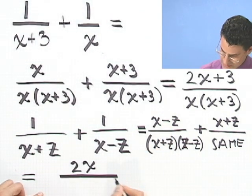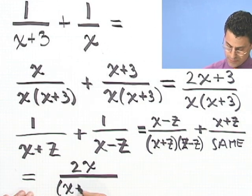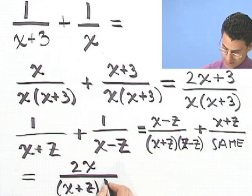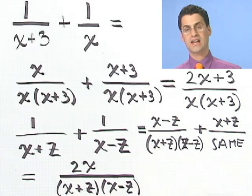And on the bottom, I just have all that good stuff there. And let's make sure we record it correctly here. So that's going to be x plus z times x minus z. So there's the answer.